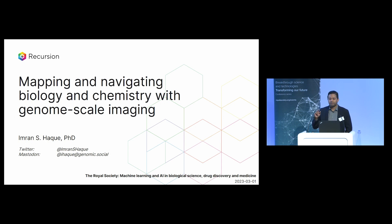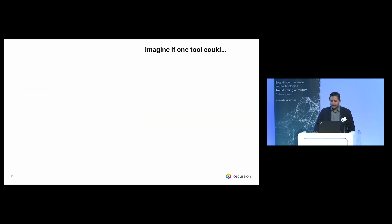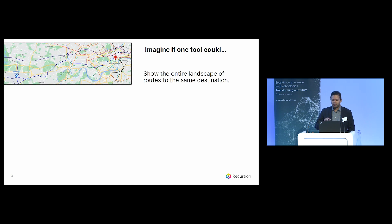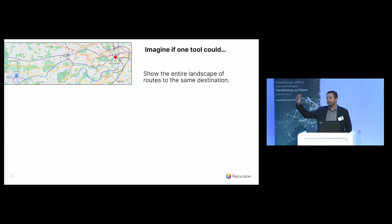This concept of maps of biology is extremely abstract, so I'll explain it by analogy. Imagine if you had a single tool available on your computer that could show you the entire landscape of routes to the same destination. Let's say you were planning your trip yesterday from Heathrow into central London, and you could see in one screen your choices of taking different trains, different roads — whether highways or local roads — rather than having to look up separately a train timetable, a tube map, and a road map.